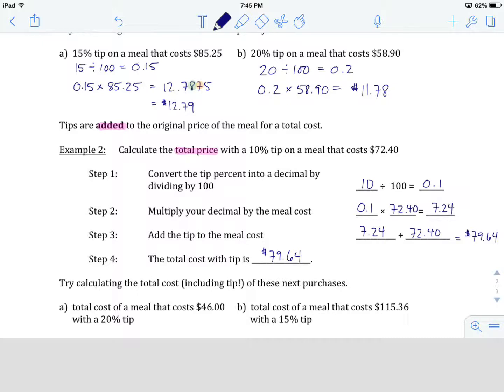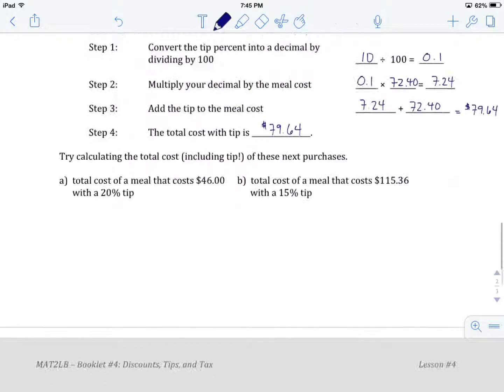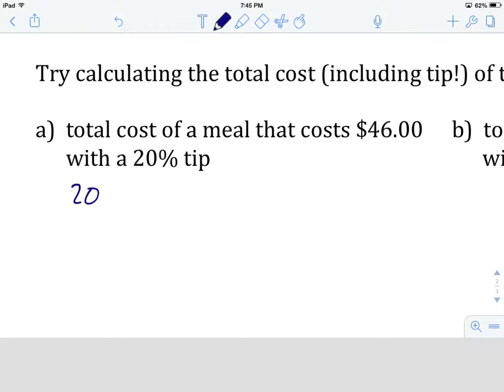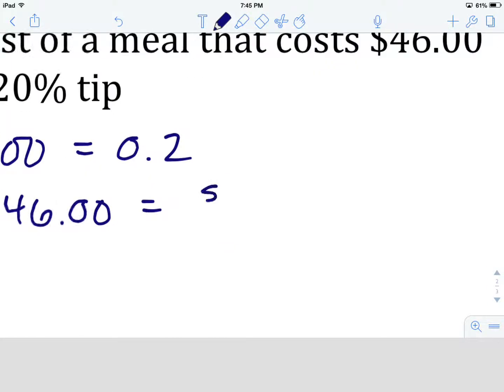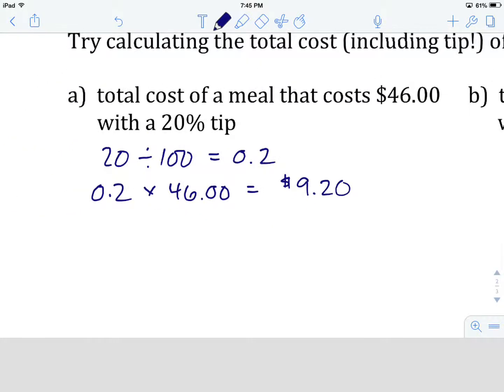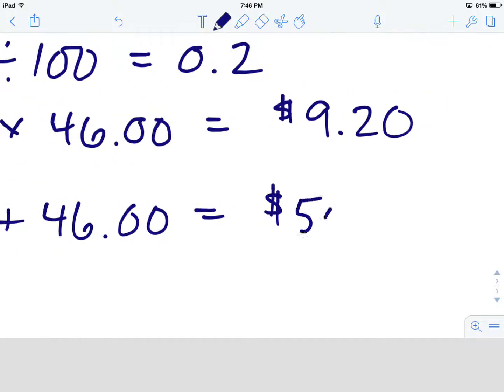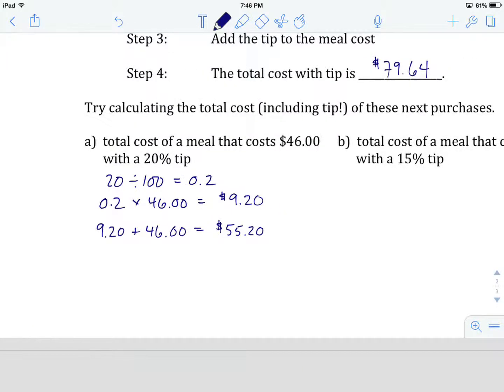Basically, we figure out the tip like we did in the first example. Then we remember to add that back to our total price. Let's look at example A. Total cost of a meal that costs $46 with a 20% tip. First things first, find the tip. 20% divided by 100 to turn it into a decimal is going to be 0.2. We take our decimal and multiply it by the cost of our meal, which is $46. 0.2 times 46.00 equals $9.20. The last step here is to now take that tip, the $9.20, and add it to the cost of the meal, which is $46.00. 9.20 plus 46.00 gives us $55.20 as the final cost of our meal, tip included.